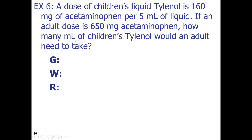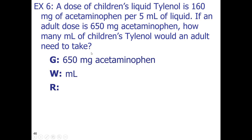Finally, it reads how many milliliters of children's Tylenol — we have a starting point. We want milliliters, and it says would an adult need to take. The given wasn't as obvious that it was 650 milligrams because the number did not follow the want as obviously as previous examples have. But we want you to brush up on your reading comprehension skills. If you see 'adult,' you can tie it in to the fact that the adult dose is 650 milligrams, and then you can easily come up with a given from there.